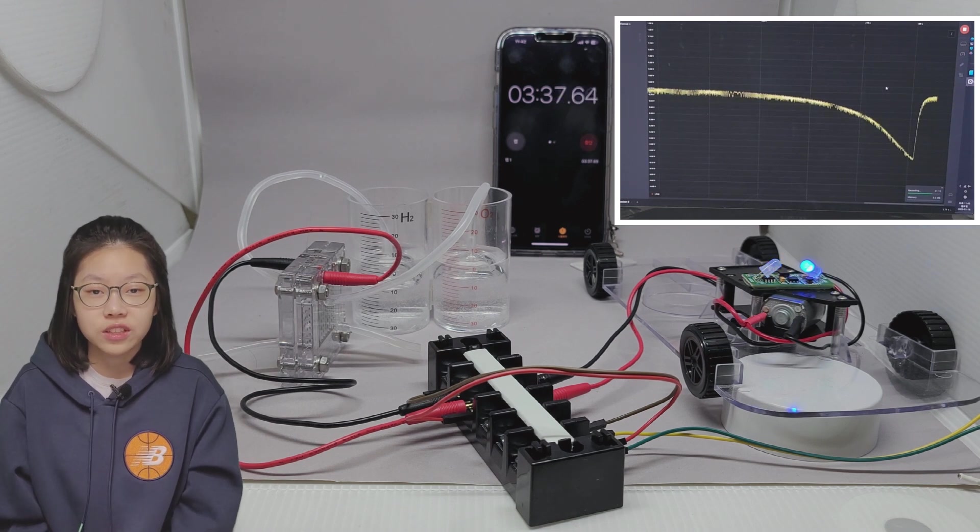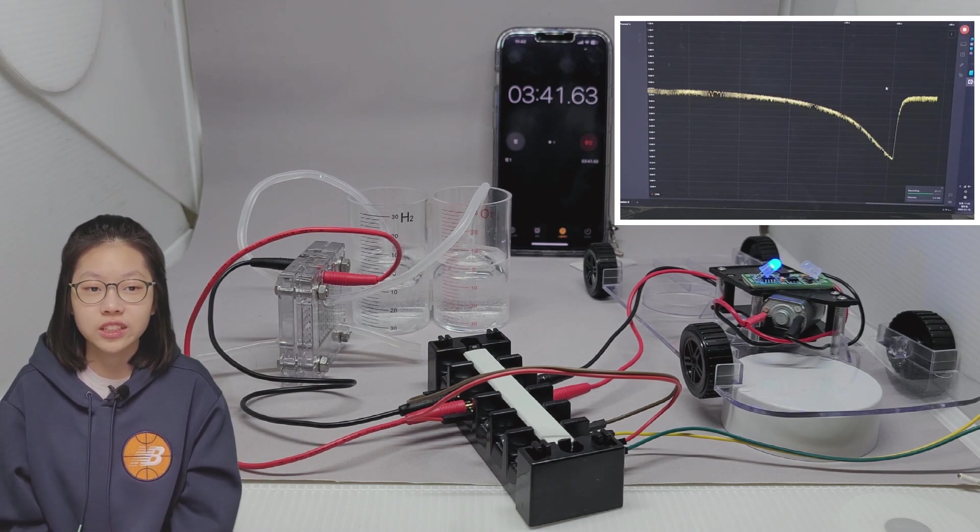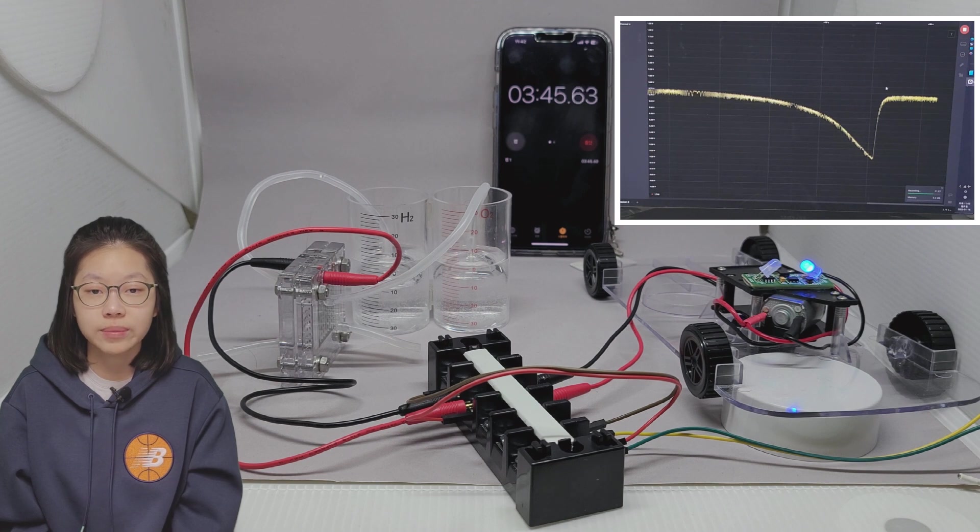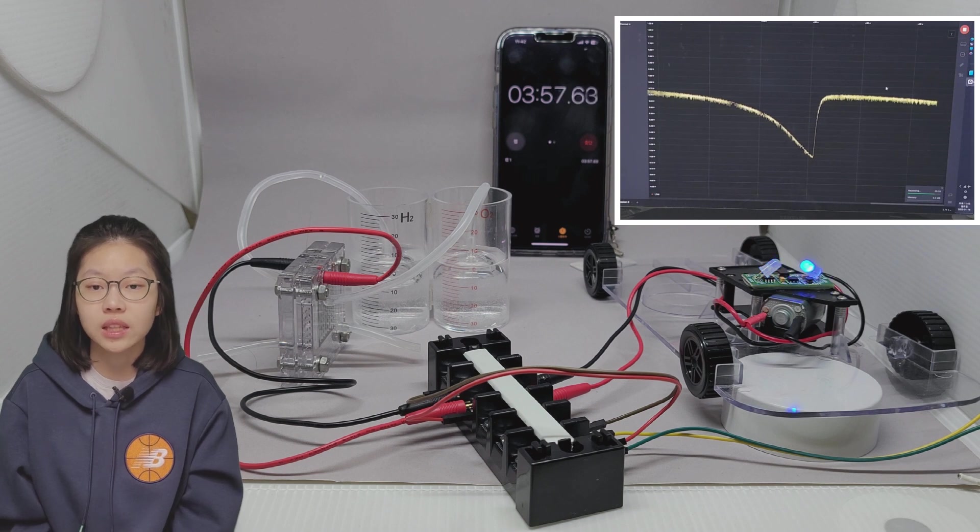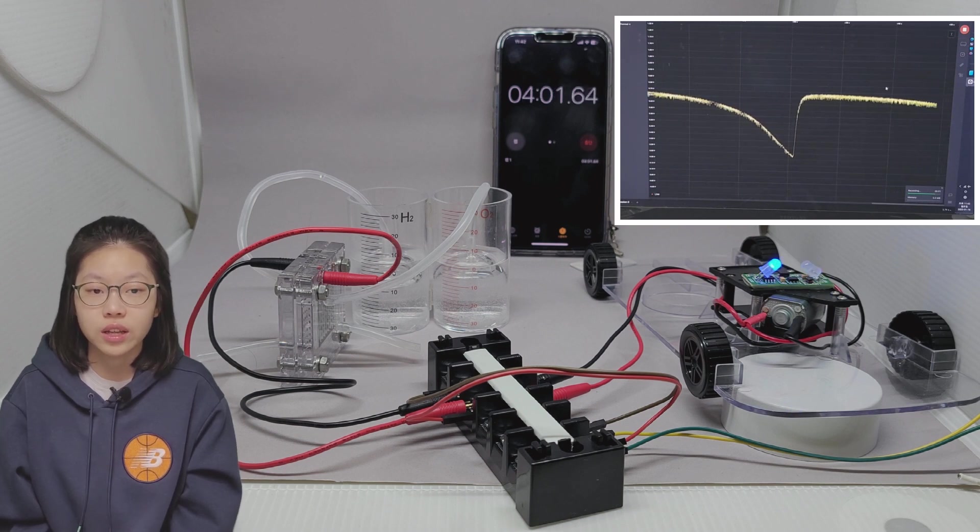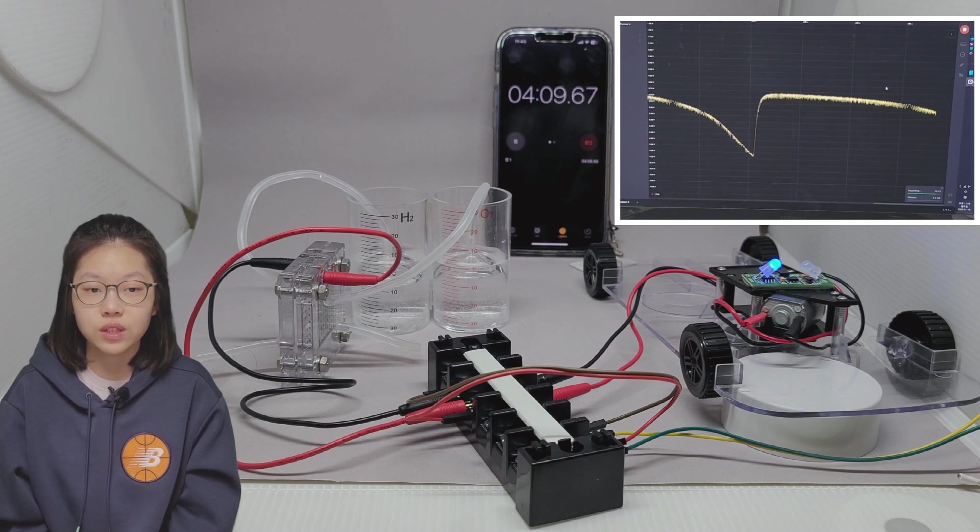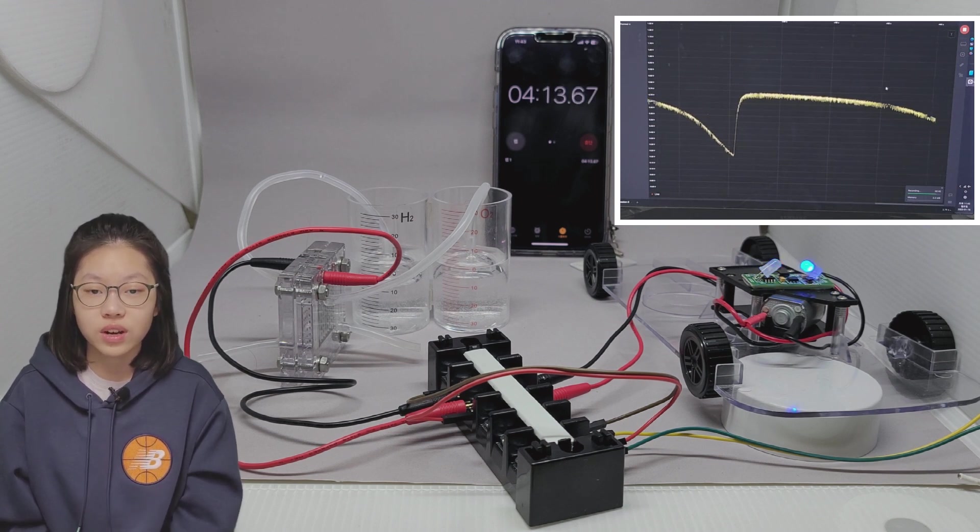Even if I touch the outlet tube on the oxygen side, the voltage does not rise. When I tap the outlet tube on the hydrogen side, the voltage goes up to 0.7V again and the motor and LEDs start working. After about 40 seconds, the voltage drops and when you flick the tube again, the voltage rises again.